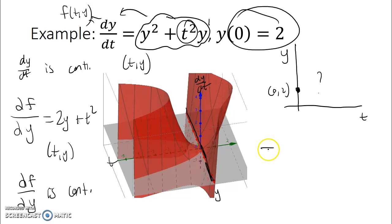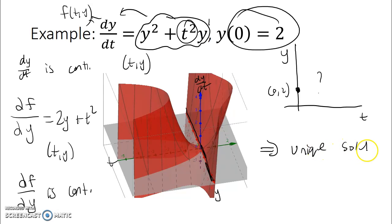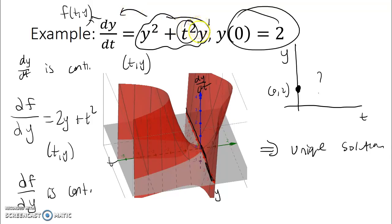Therefore, I conclude that this differential equation has a unique solution. In other words, through the ordered pair (0, 2), there is exactly one solution curve passing through it. This theorem didn't tell me what that solution curve looks like, but I know that there is one.